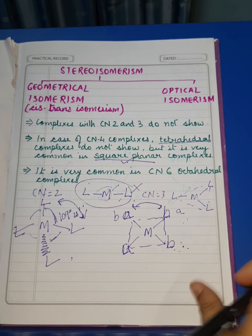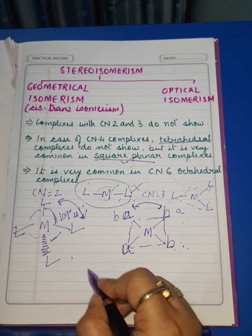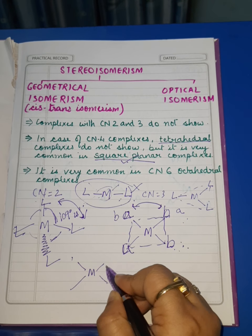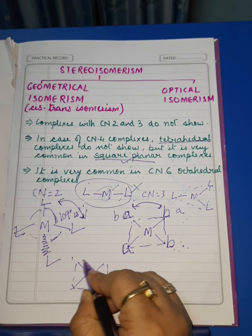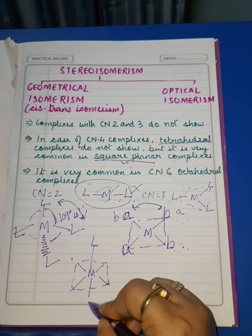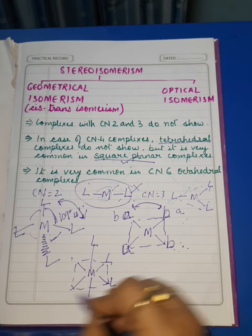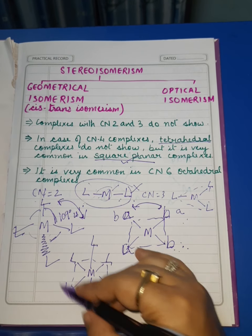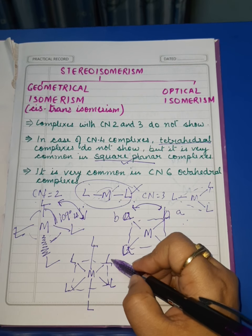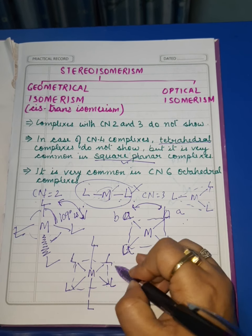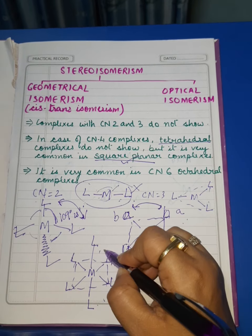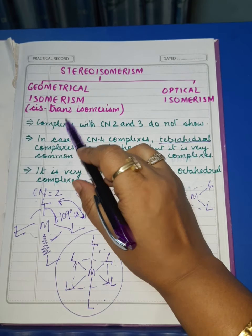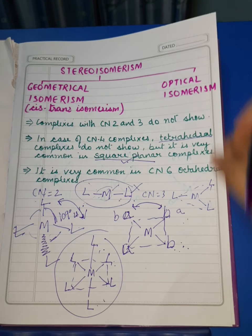Coming on to the octahedral complex, octahedral complexes can be drawn as the central metal atom bonded with four ligands in a square plane, with a fifth ligand above and one below the plane. Since in octahedral complexes we have positions of ligands both on a plane and axially, we can easily have cis and trans isomers.